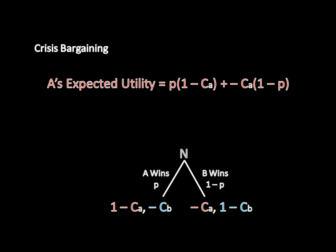Well, A knows that P percentage of the time he will get the value for winning, which is 1 minus CA. He also knows that 1 minus P percentage of the time he will get the value for losing, which is negative CA. Fortunately, we can simplify that expression in the manner you see on your screen, which leaves us with a much nicer looking P minus CA.